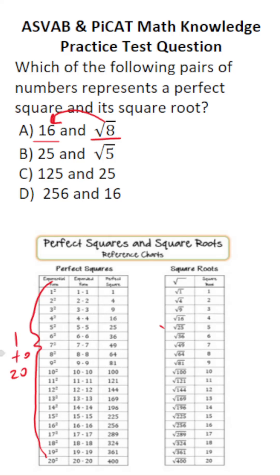So let's go through these. Is 16 a perfect square? You can see it's right here. 4 squared equals 16. But what is the square root of 16? We can see that the corresponding square root is 4. So the square root of 16 is 4, not the square root of 8. Therefore, those are not a pair.